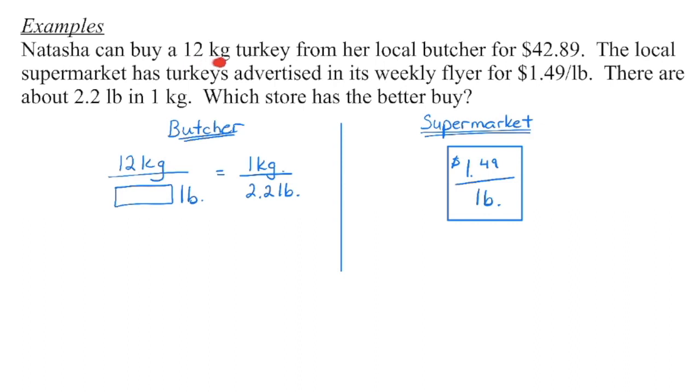I'm going to begin by taking my 12 kilogram turkey and figuring out how many pounds that is. We know that there are 2.2 pounds in one kilogram. So over here, I've got the same unit on the same line, doesn't matter if it's top or bottom, just same unit, same line. And those are equal to each other, which means I can figure out what this amount is by cross-multiplying. So 12 times 2.2 will give me the number of pounds.